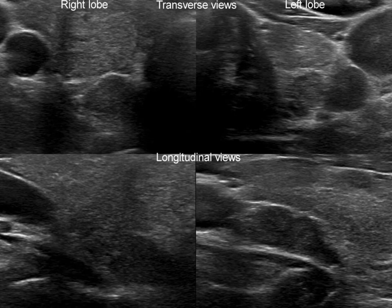Although their localizations are similar, it is evident on longitudinal scan that the right lesion, marked with yellow arrows, is within the lobe, while the left one, marked with red arrows, is outside the thyroid.